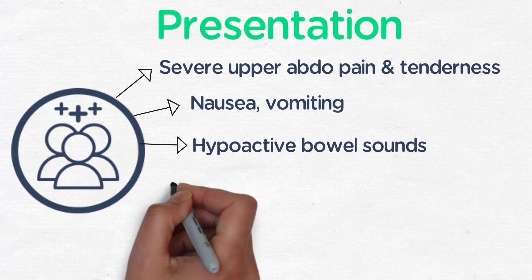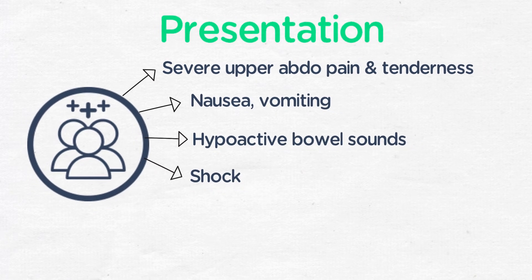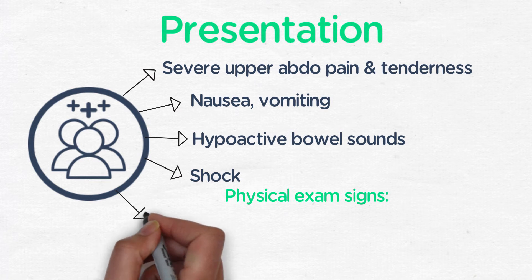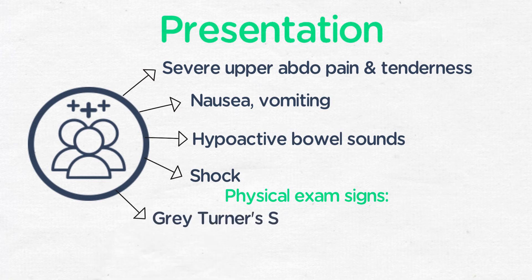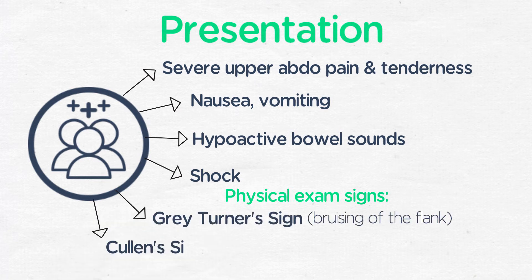In its severe form, the patient may present in shock due to fluid loss from third spacing. In severe necrotizing or hemorrhagic pancreatitis, classic physical exam signs include Gray-Turner sign, which is bruising of the flank, or Cullen sign, which is bruising of the umbilicus.